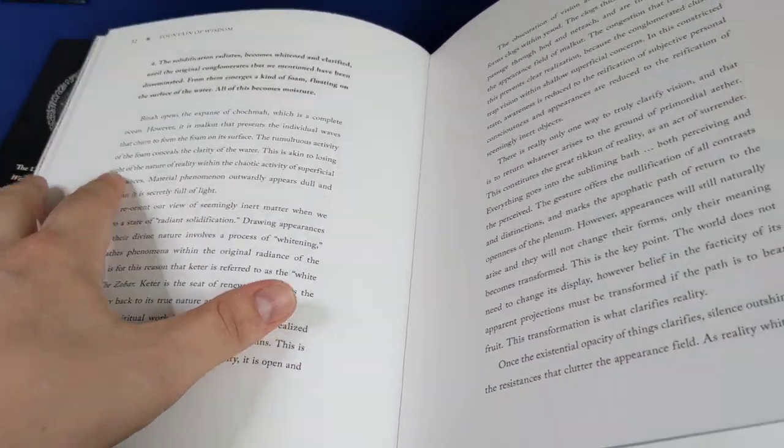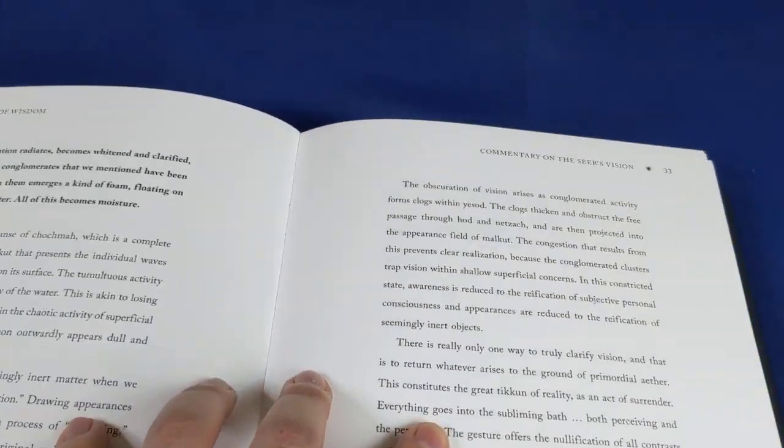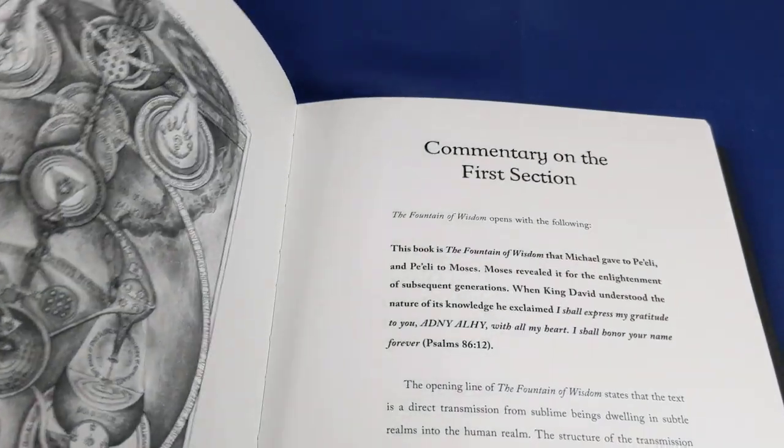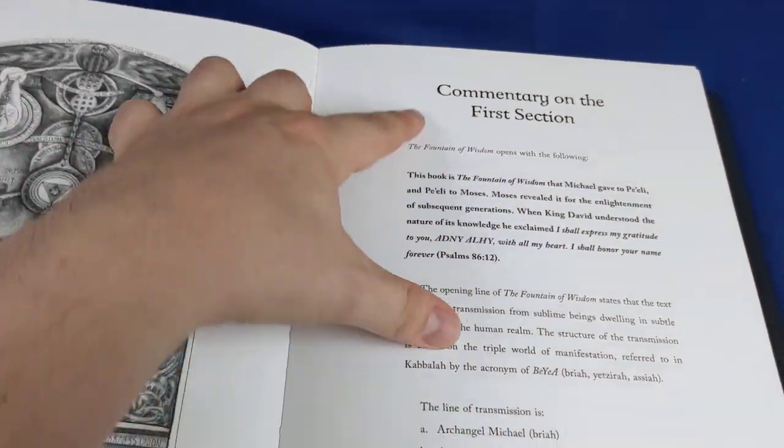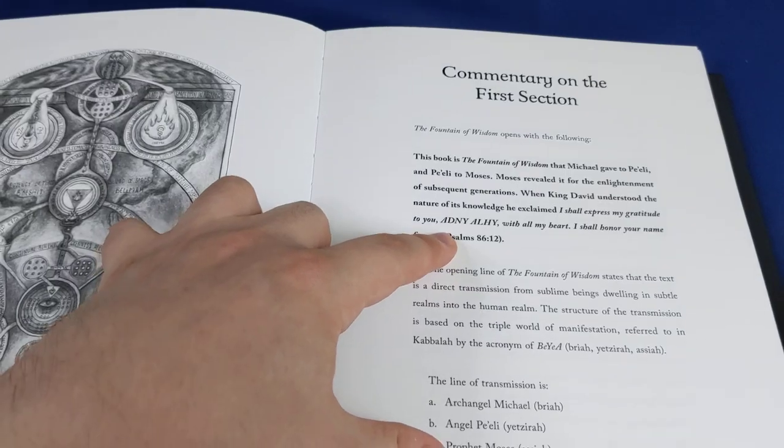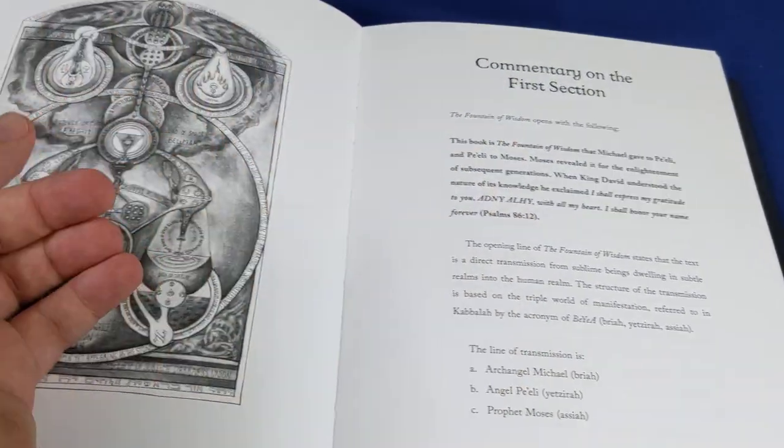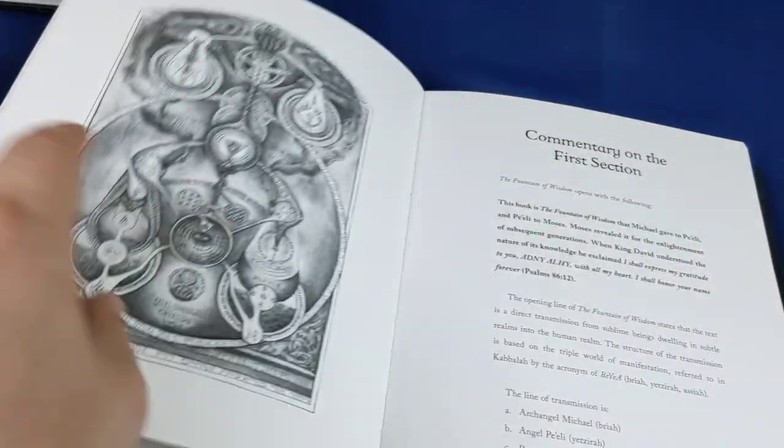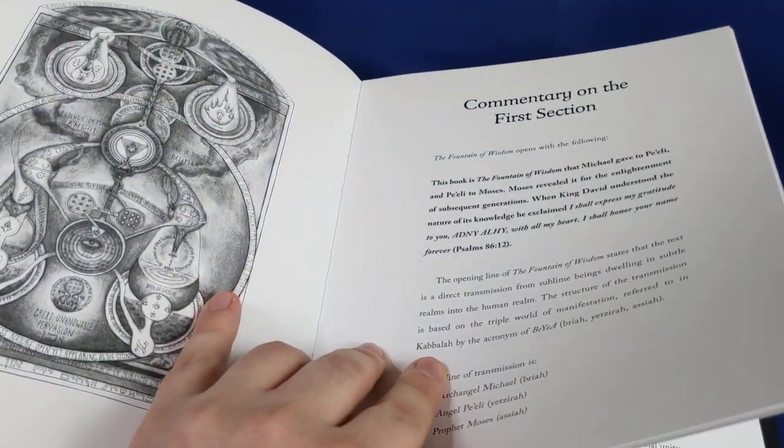So then I was saying there's an introduction, there's that commentary on the seer's vision, and then he simply goes back to the very beginning and gives us the commentary on the first section, which is informed by that little middle section that he's started off with there.